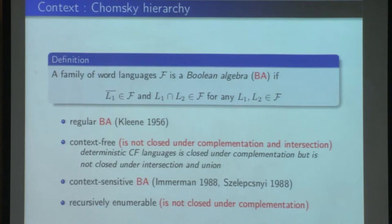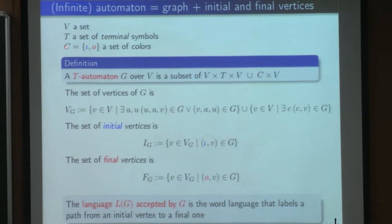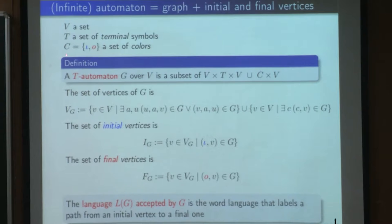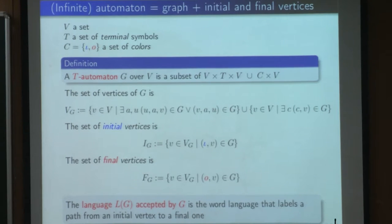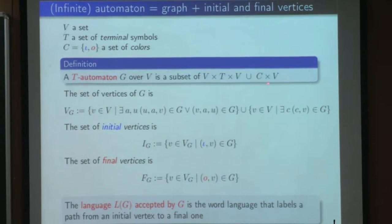In this talk, we will provide various Boolean algebras, in particular of context-sensitive languages, and we will obtain Boolean algebras from automata. For us, an automaton is just a graph plus initial and final vertices, and this automaton may be infinite. More formally, we start from a set V of possible vertices, a set T of terminal symbols, and a set of two colors, Iota and O.